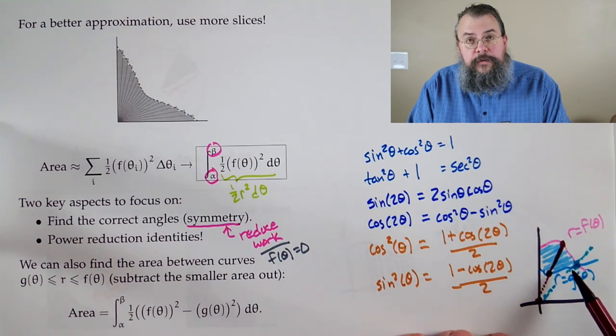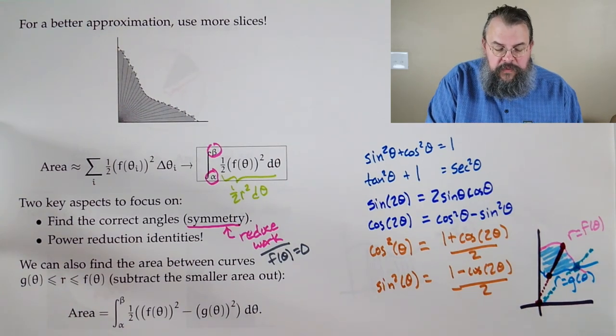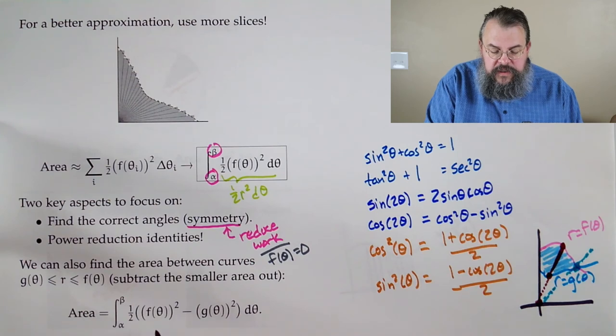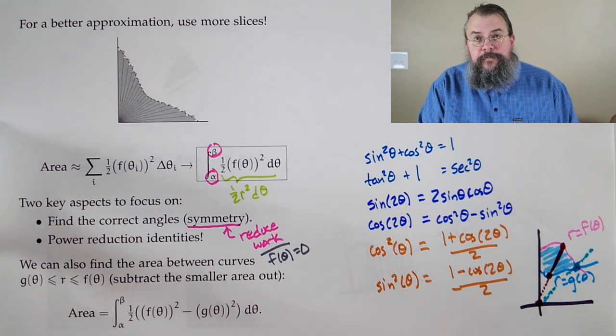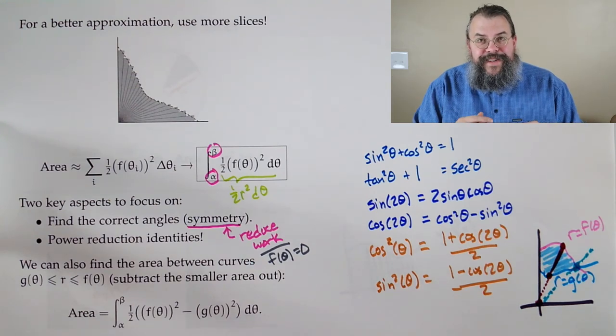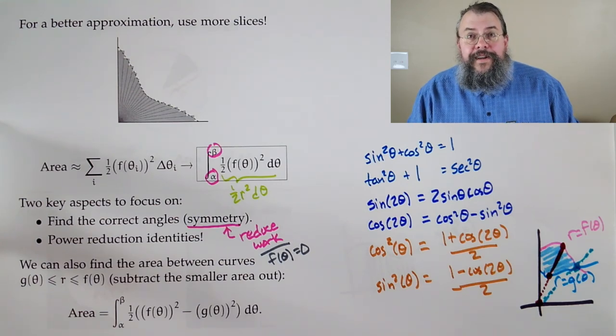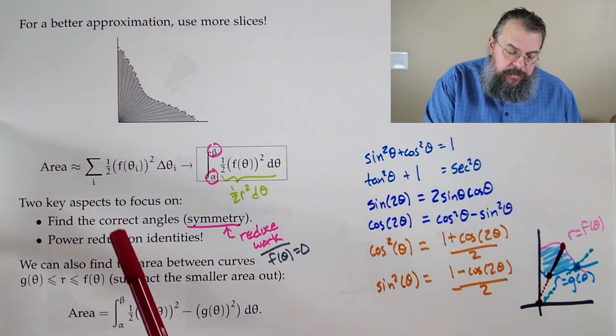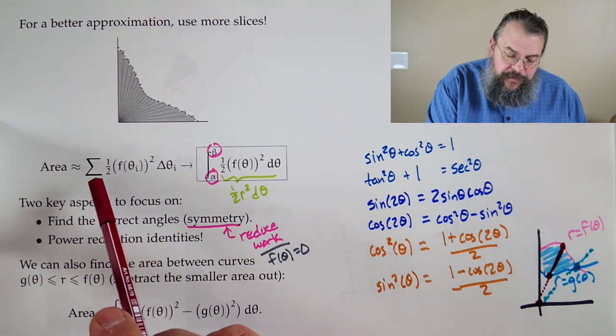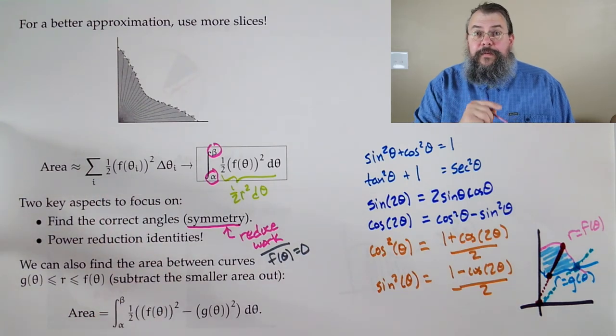Which is why it's set up, one half, outer function squared, minus inner function squared. Big area, minus little area. And there we go. And actually, it's not so bad. The main idea, remember to square your function. Don't forget the half. A lot of people forget the half. That's a common mistake.